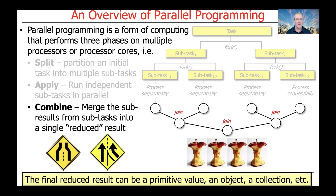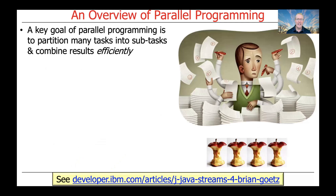The third and final phase is the combine phase, which involves merging the subresults from subtasks into a single so-called reduced result. This final reduced result can be a primitive value such as an int or a double, an object such as a string, or a collection such as a list, map, or set. A key goal of parallel programming is to partition many tasks into subtasks and then combine the results efficiently.